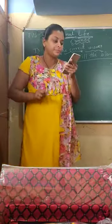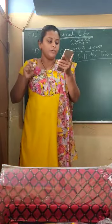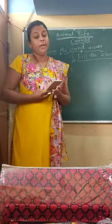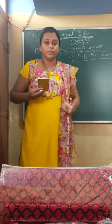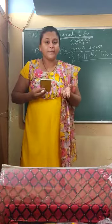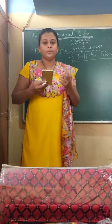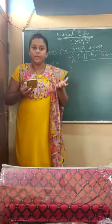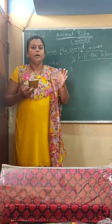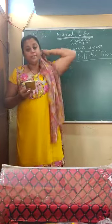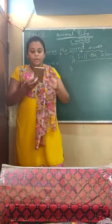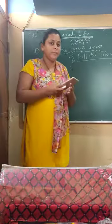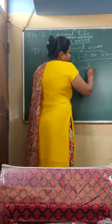First question: a nymph sheds off its old skin during the process of dash to become an adult cockroach. We discussed processes like hatching and moulting. In moulting, the cockroach sheds its old skin. Hatching is when the baby breaks out of the egg shell. So the answer here is moulting.